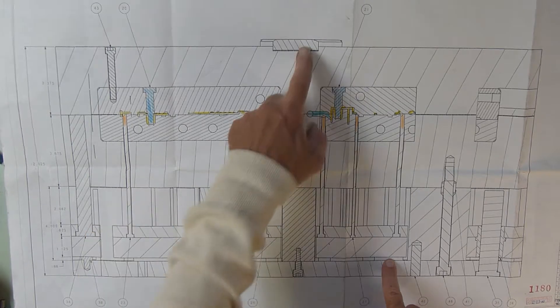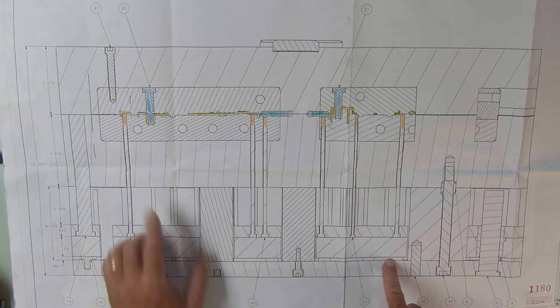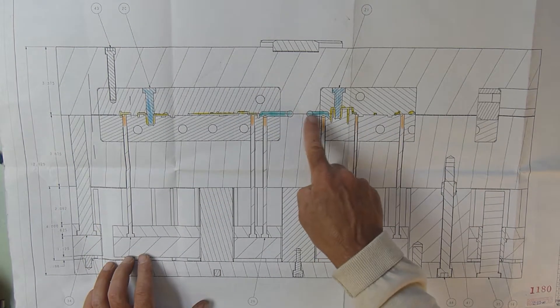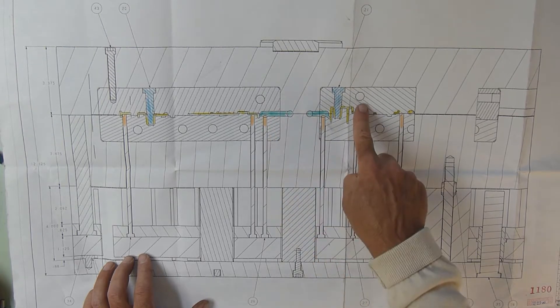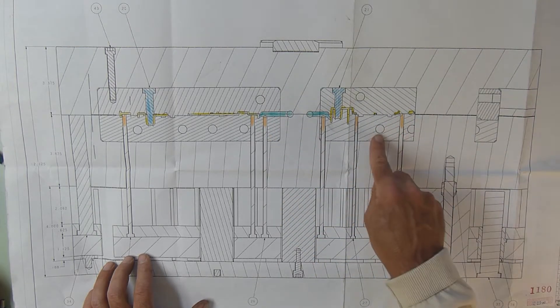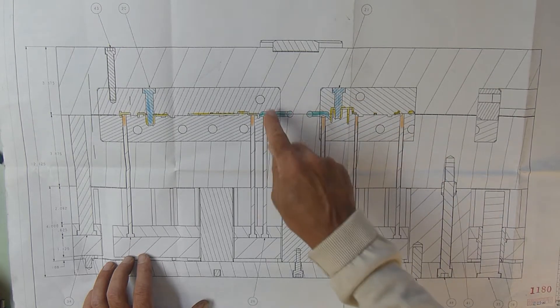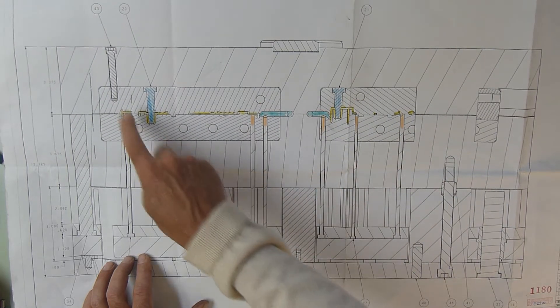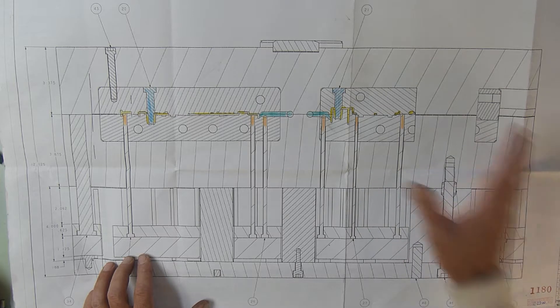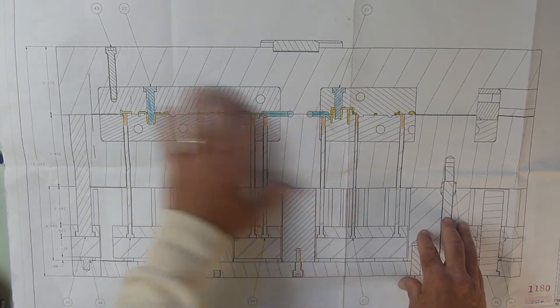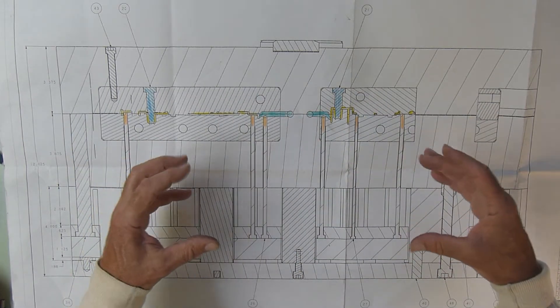The plastic will come in and fill the mold. So injection fills the part, cooling—you can't see the side view, but these are water lines. And there's a series of water lines that we'll talk about that are going through the cavities and cores to cool the part down.